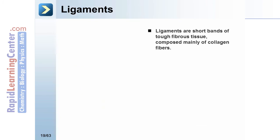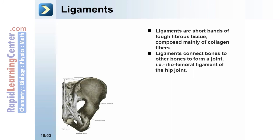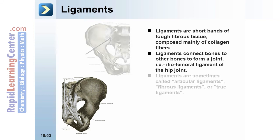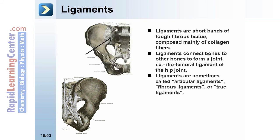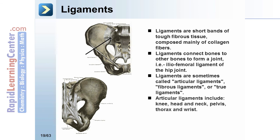Ligaments are short bands of tough fibrous tissue composed mainly of collagen fibers. Ligaments connect bones to other bones to form a joint, for instance the iliofemoral ligament of the hip joint. Ligaments are sometimes called articular ligaments, fibrous ligaments, or true ligaments. Articular ligaments include those of the knee, head, neck, pelvis, thorax, and wrist.